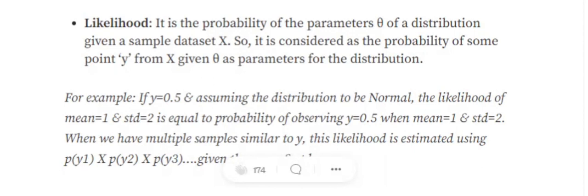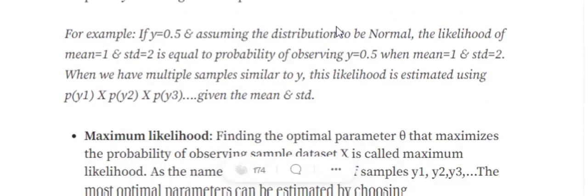sample x from that distribution is called likelihood. For example, if we have a point equals to 0.5, and we assume that this point has been generated using some normal distribution and we have been given